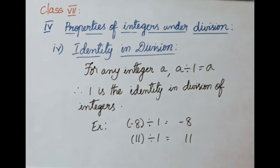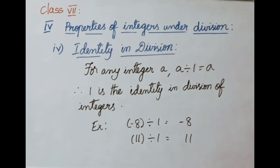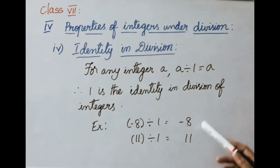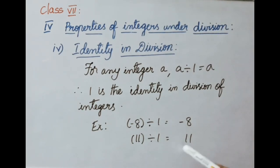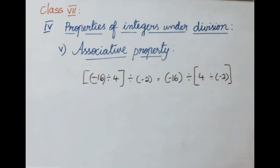Identity in division: for any integer A, A divided by 1 equals A. Any number divided by 1 gives the same number, so 1 is called the identity in division of integers. Example: minus 8 divided by 1 equals minus 8. And 11 divided by 1 equals 11. Therefore 1 is the identity in division of integers.